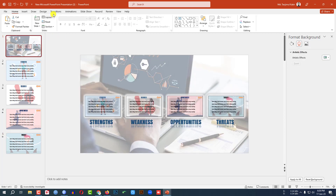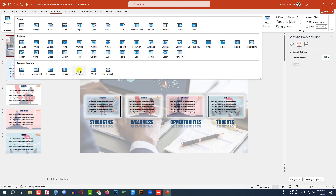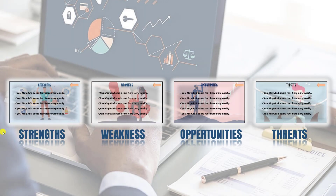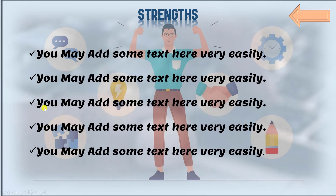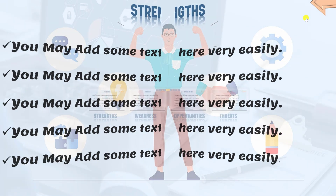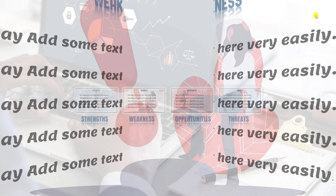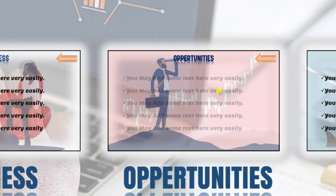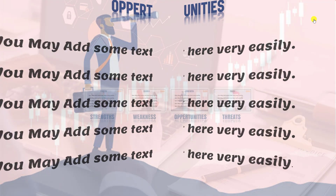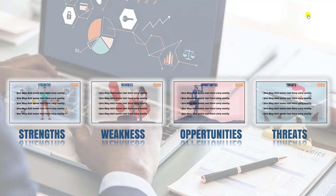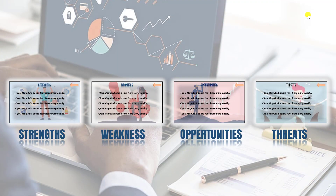Go to the main slide, go to Transition, and click on Window. Let me watch the slide show. Clicking on each SWOT thumbnail zooms into that slide and shows the content — Strength, Weakness, Opportunities, and Threat — each one is perfect. Hope you found this video helpful. If you like this video, please share it with your friends and family, and don't forget to subscribe. Thank you.